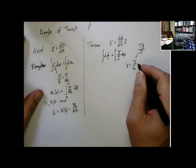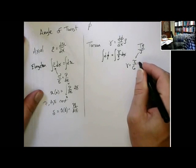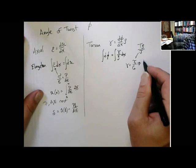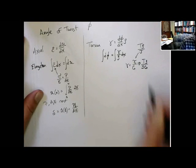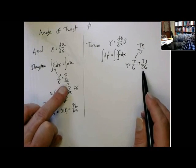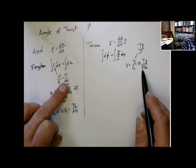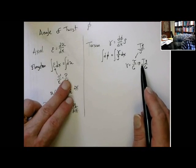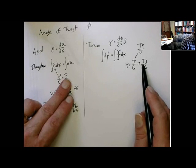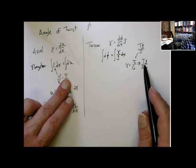So this now becomes T rho over JG. And you can see it's pretty analogous. So we have the area corresponds to J, the Young's modulus corresponds to the shear modulus. The internal reaction force P is for axial. And that corresponds to the internal reaction torque T for the torsion. And it has a representation of rho.